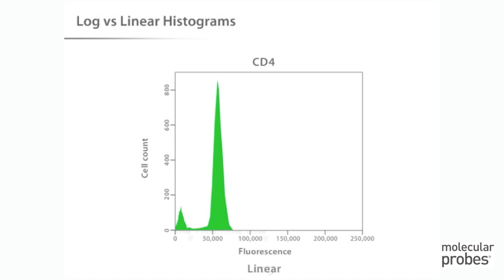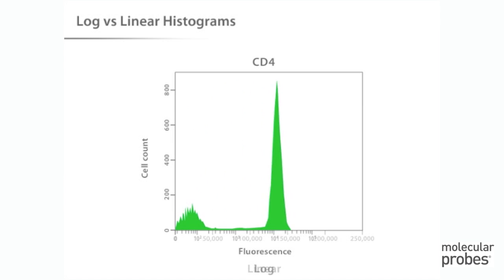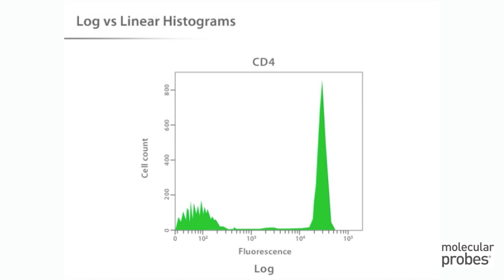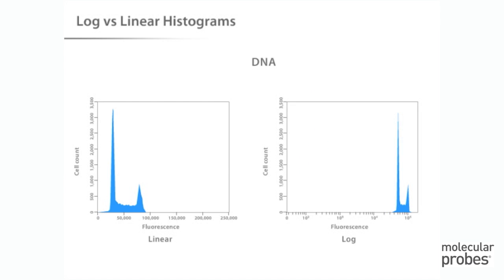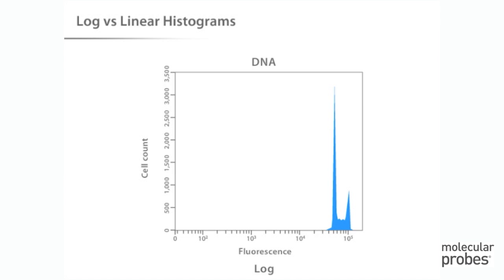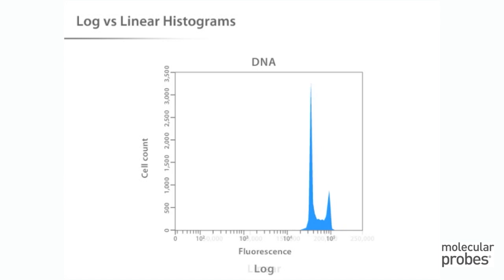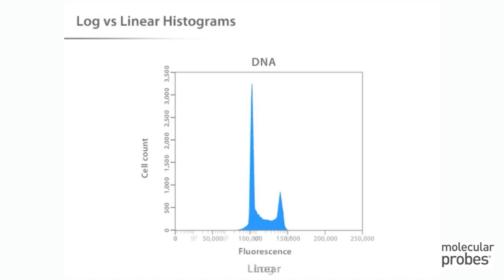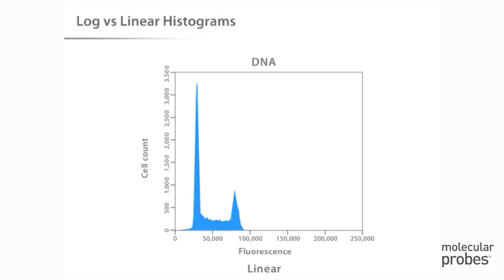Switching fluorescence to a log scale allows both populations to be seen clearly on the same plot. Conversely, in an experiment to measure DNA quantities in cells, we are dealing with a very narrow range of fluorescence values. If we plot this data on a log scale, important subtle differences are obscured. When these same data are plotted on a linear scale, the specific distribution of DNA amounts is more apparent.